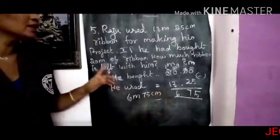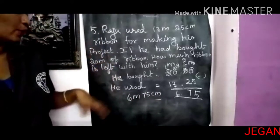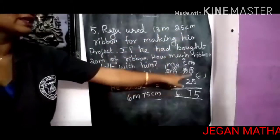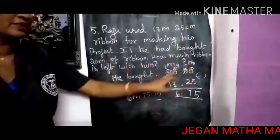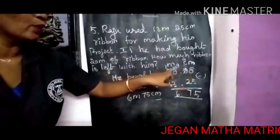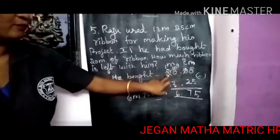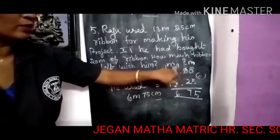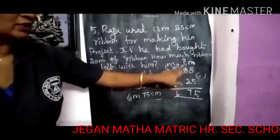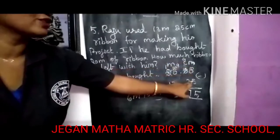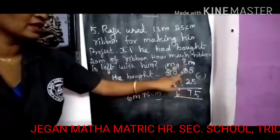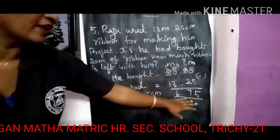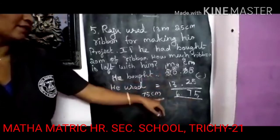Once again I am explaining it — listen carefully. Raju bought a ribbon of 20 meter. He used 30 meter and 25 centimeter for his project. So 20 meter minus 30 meter 25 centimeter. Start from the centimeter side: 0, so borrow 1. The nearest number is also 0, so borrow from 2 — change to 1 and write 10. Again borrow, crossout and write 9. Here 10 minus 5 is 5, then 9 minus 2 is 7, and 9 minus 3 is 6, and finally 1 minus 1 is 0. So the final answer: the left ribbon is 6 meter 75 centimeter.